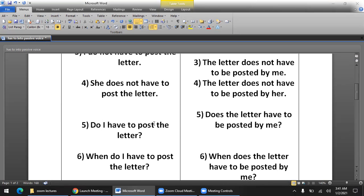Now let's change this to a question. Fifth sentence: 'Do I have to post the letter?' When the subject is singular like he, she, it, or a singular noun, we use 'does' to start the sentence. In passive: 'Does the letter have to be posted by me?' Put a question mark at the end.